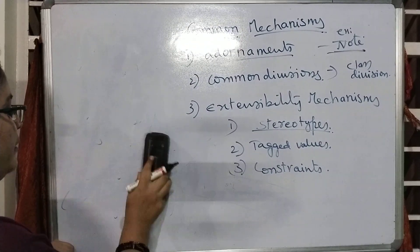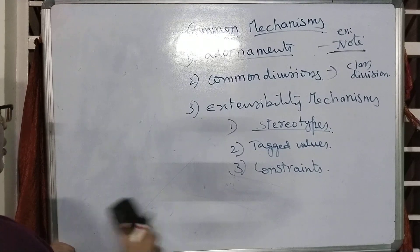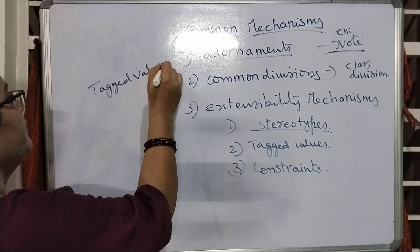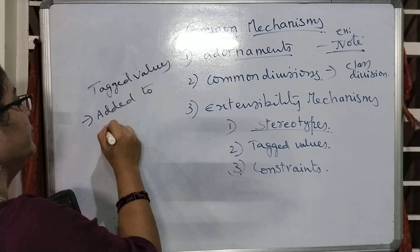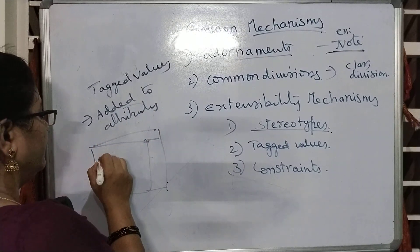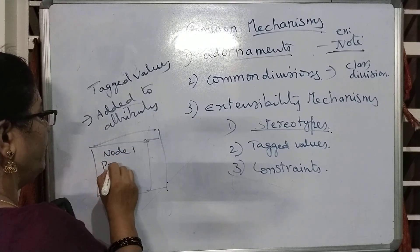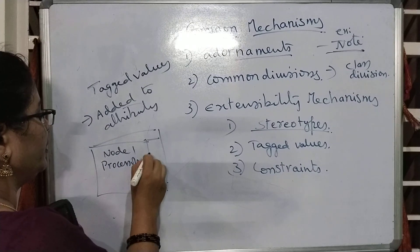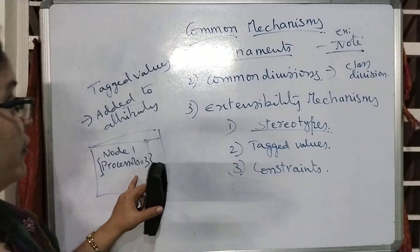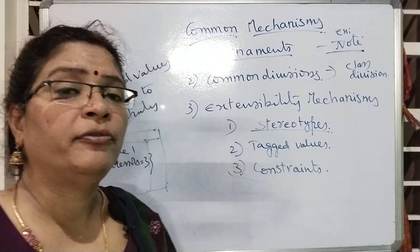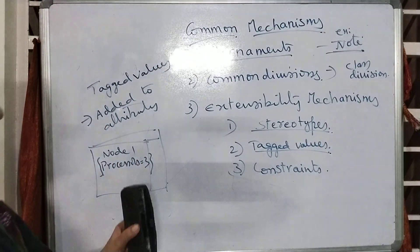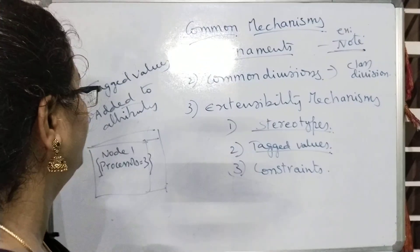The next one we are going to see is tagged values. So what is the meaning of these tagged values? Tagged values are values added to a set of attributes. For example, this is a node — the name of the node is 'node1' and the number of processors for this node is equal to 3. They are represented in curl braces. So the attribute for this particular node is 'processors' and the tagged value for this processors is 3. You can add any kind of value to the attribute using tagged values.